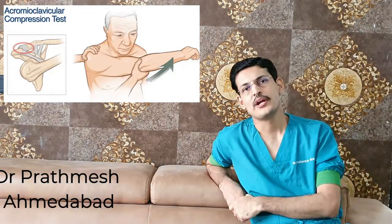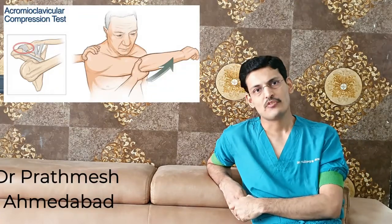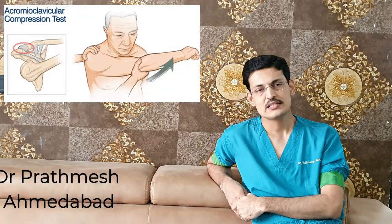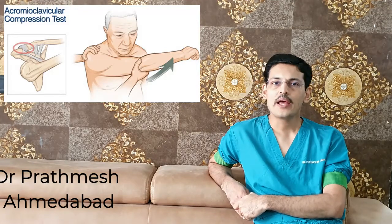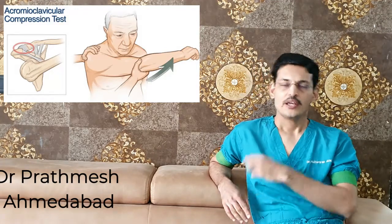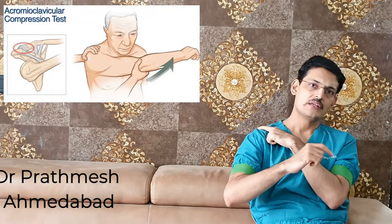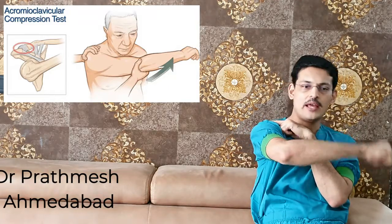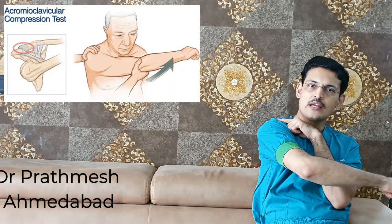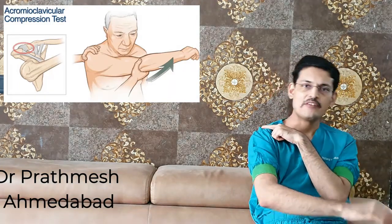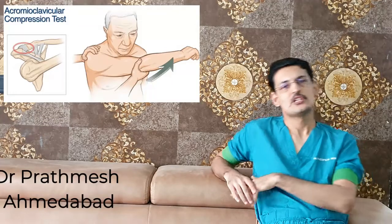The third and most specific test is O'Brien's active compression test. The thumb is placed over the joint, the arm is internally rotated and positioned forward, then slowly turned. If compressing the joint causes pain, this is a positive O'Brien's active compression test.